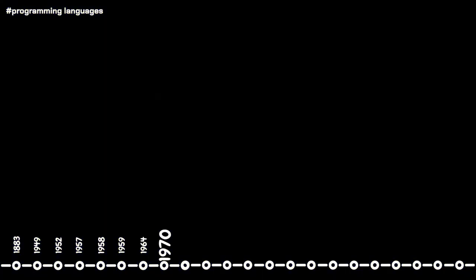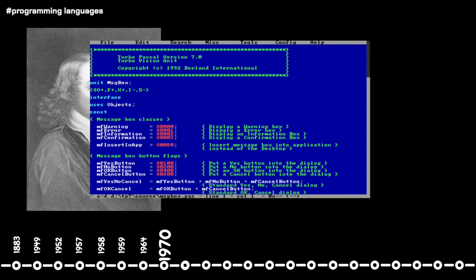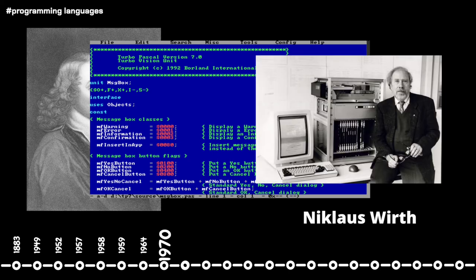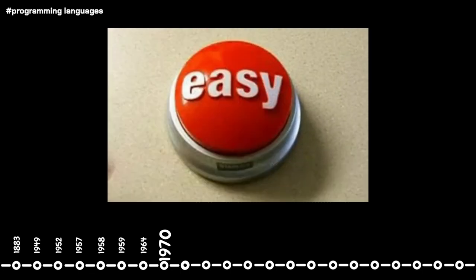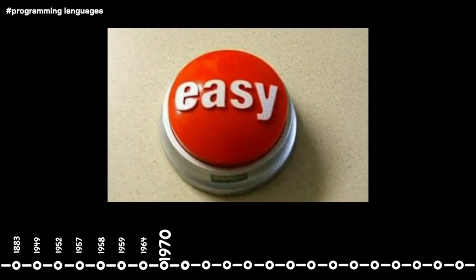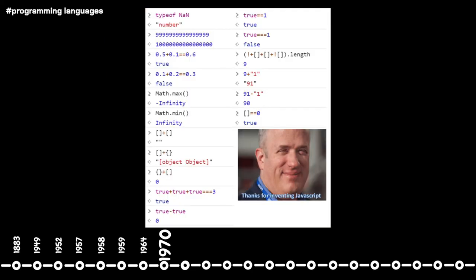In 1970, named after the famous French mathematician and philosopher Blaise Pascal, the programming language Pascal was developed by Niklaus Wirth. Compared to prior languages, Pascal was relatively easy to learn and was favored when teaching computer programming at the time. It was an official language designed to encourage good programming style and structure.